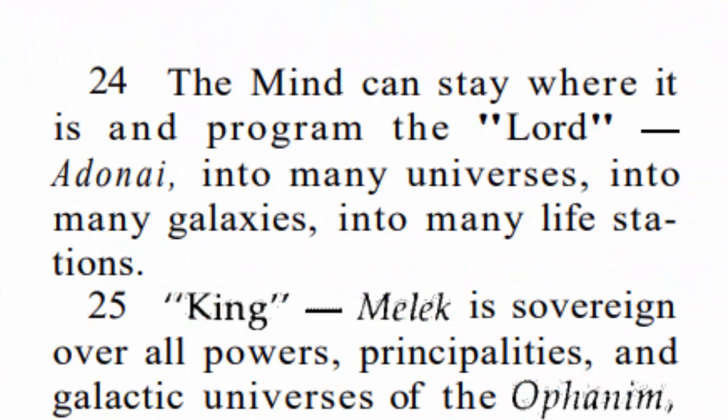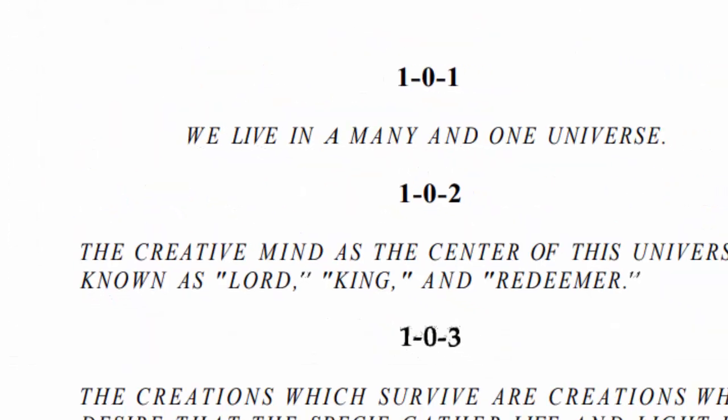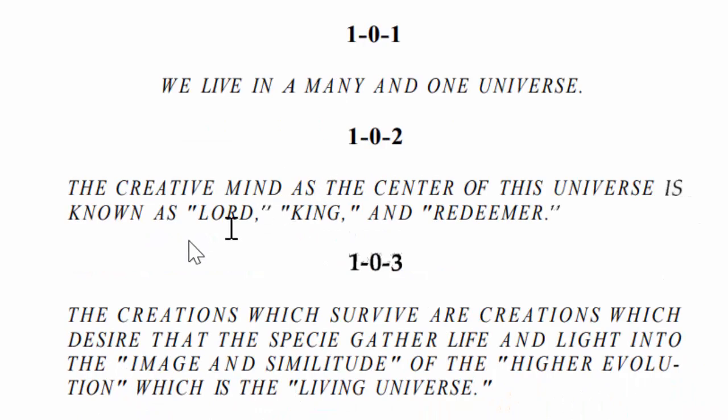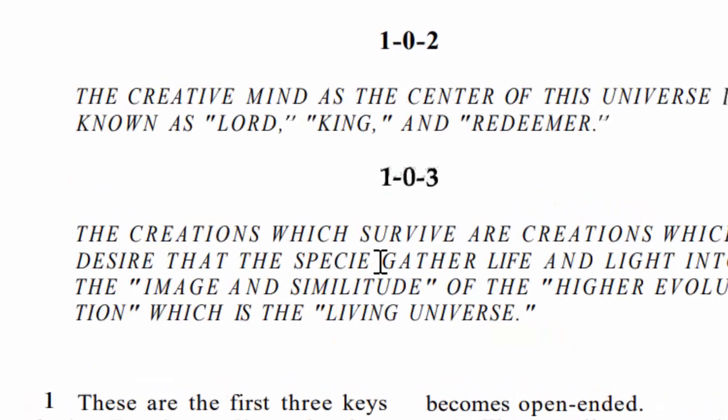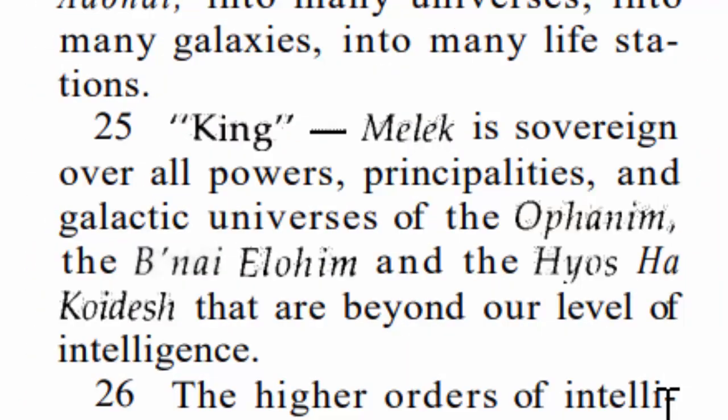Verse 24 says the mind can stay where it is and program the Lord Adonai into many universes, into many galaxies, into many life stations. So when we look back at the key — 'the creative mind as the center of this universe is known as Lord, King and Redeemer' — he's at the center but he's programming these beings here on earth, similar to the way the Ophanim are programming the prophets and speaking through them. Verse 25 speaks on these Ophanim, saying King Melech is sovereign over all powers, principles, and galactic universes of the Ophanim, the Benay Elohim, and the Heos Ha Kodesh, that are beyond our level of intelligence.